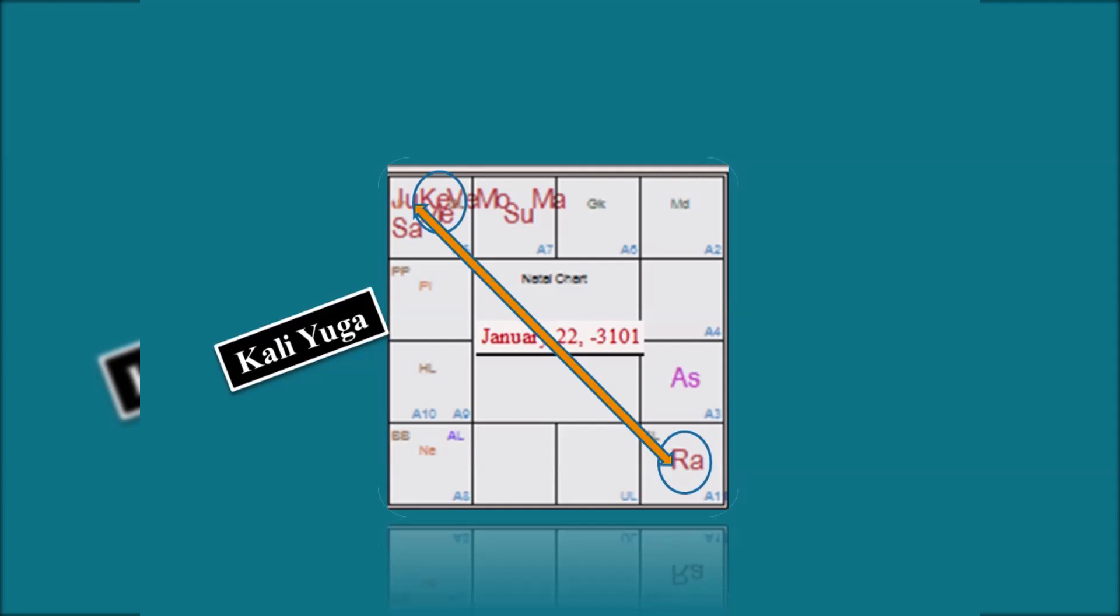The nodal connection should be there for an eclipse to happen. Only when Rahu and Ketu, one of them are joining with the sun and the moon, the eclipses can happen. So that is a precondition. Nodal position is a precondition for an eclipse.